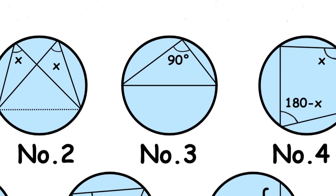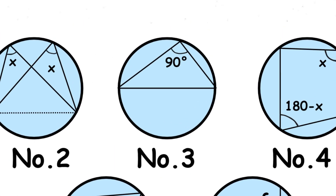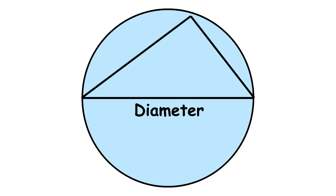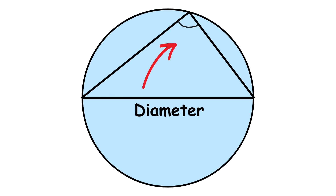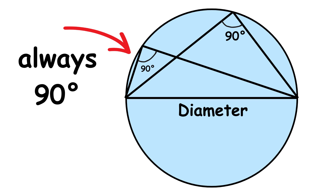The third circle theorem is the angle in a semicircle theorem. If you draw a triangle inside a circle where one side is the diameter, the angle opposite that side is always 90 degrees — no exceptions. This works because the triangle is essentially half of a full 180 degree angle.